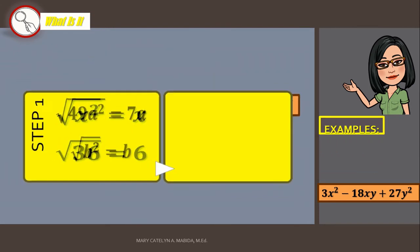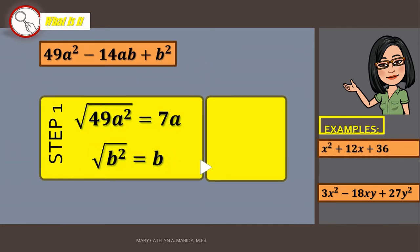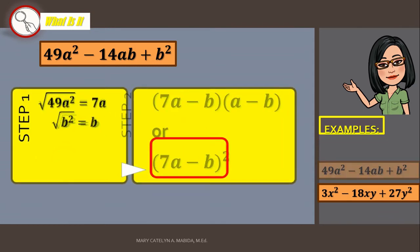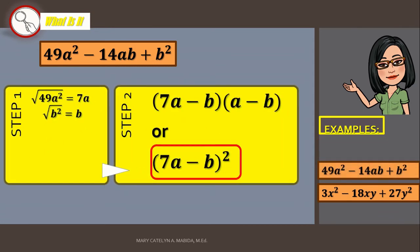Let's go to example number 2. Factor out 49a squared minus 14ab plus b squared. Again, step 1, you are right! Get the square root of the first and the last term. Step 2, list the square roots as the sum or difference of two terms. Now, tell me, what is the operator here? This one? You are correct! It is subtraction. And therefore, your square of a binomial should also be a subtraction. Good job, guys!